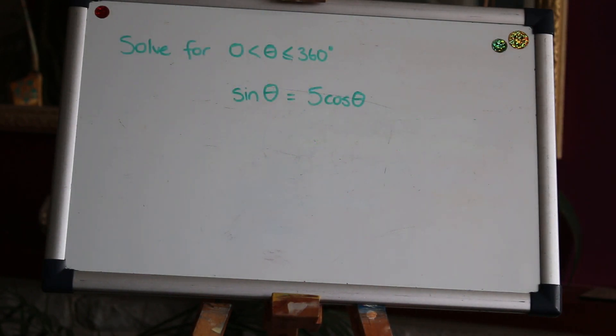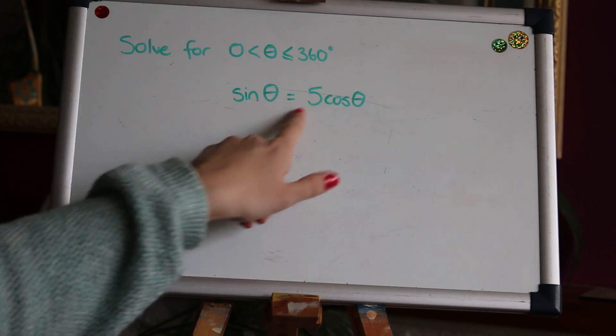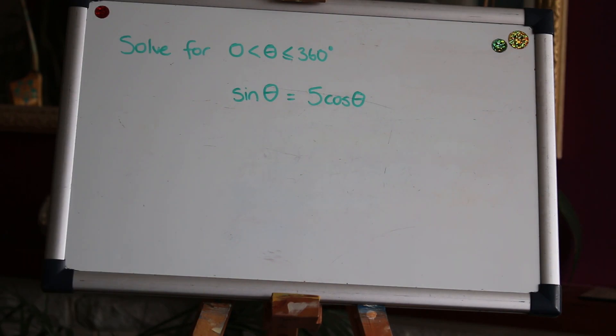Okay, so here we have the first exam style question. It's asking us to solve in the range 0 to 360 degrees this equation here. The way I'm going to solve this is by using the second identity that sin divided by cos is tan. You've only got two identities that you can use and there's nothing being squared here so it's clearly not the first identity.